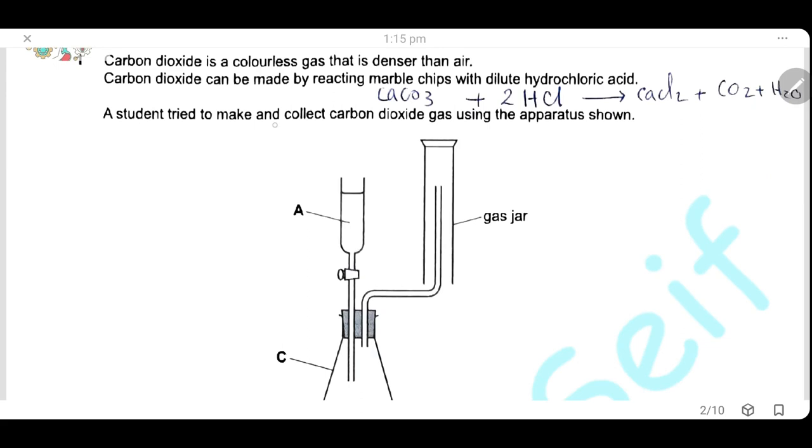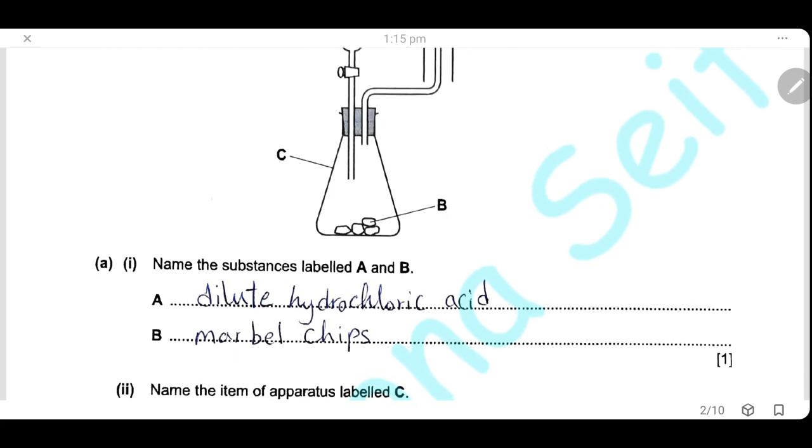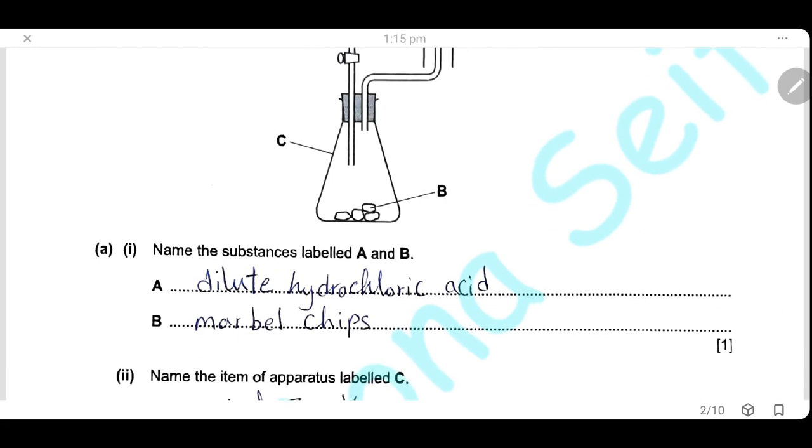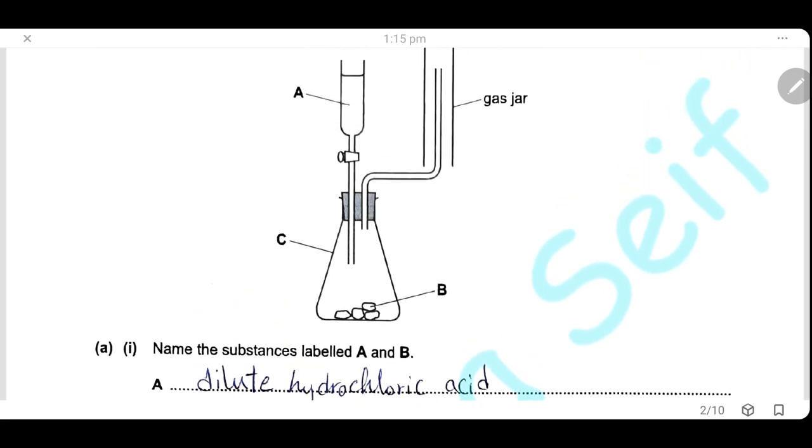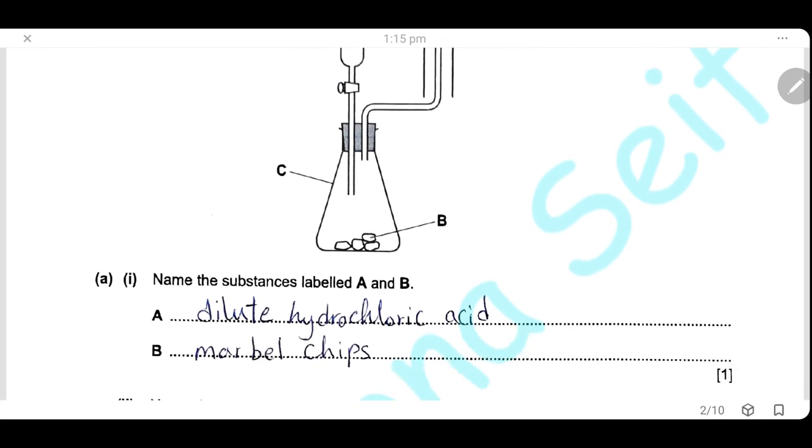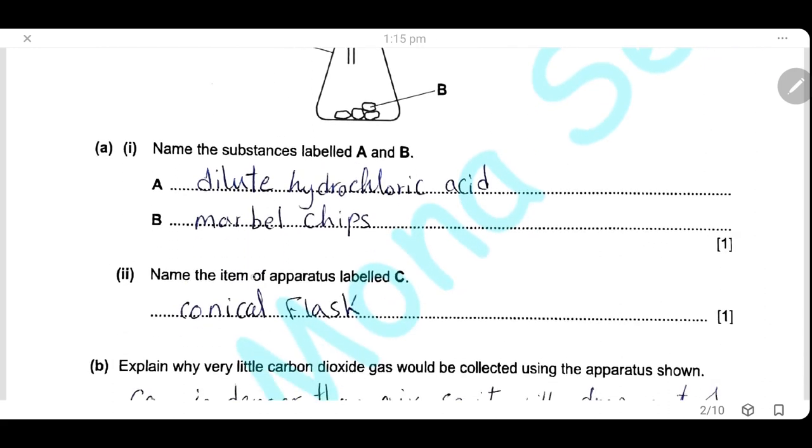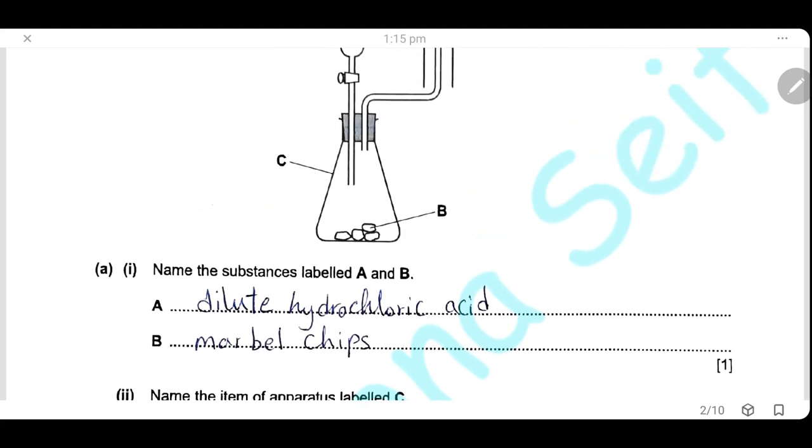A student tried to make and collect carbon dioxide gas using this apparatus shown. Name the substance labeled A and B. A is hydrochloric acid, and B is marble chips. Name the item of the apparatus labeled C. C is a conical flask.